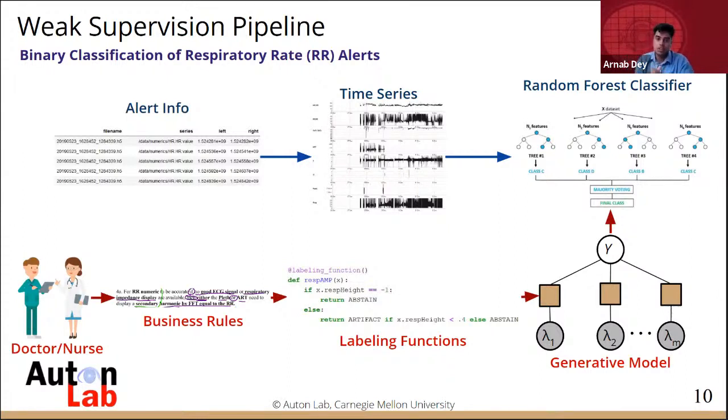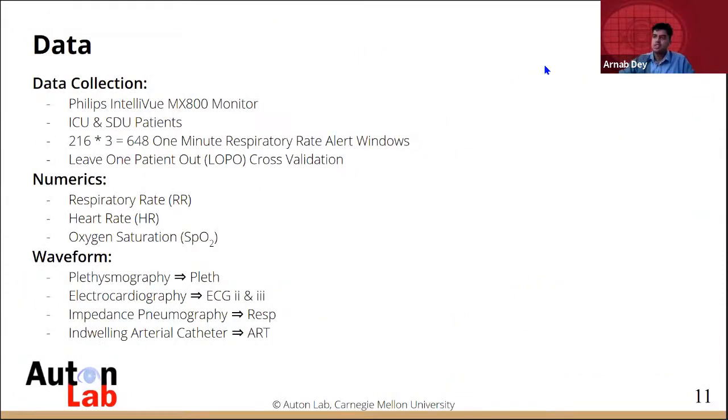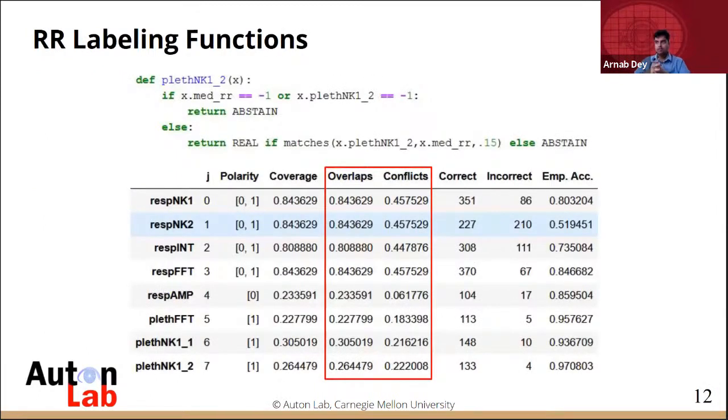The pipeline works by having a domain expert provide business rules that you turn into labeling functions. These labeling functions vote on training data, then a generative model outputs probabilistic labels that you feed into a classifier for prediction.